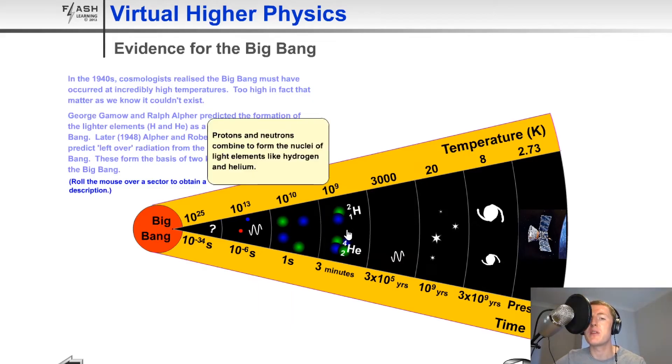Then about 3 minutes after the Big Bang, protons and neutrons combined to form the nuclei of light elements like hydrogen and helium.